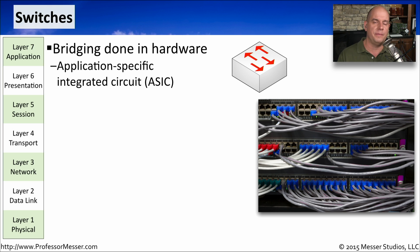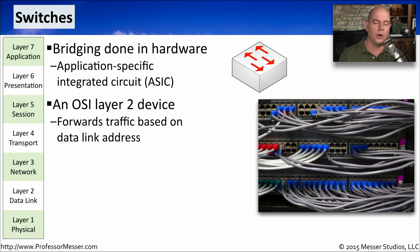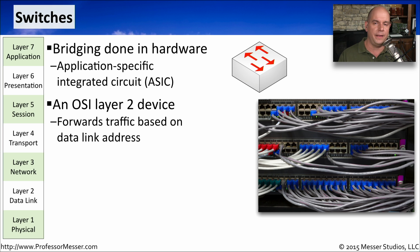Switches are able to move information very quickly because of the hardware inside of them. This hardware is called an application-specific integrated circuit, and we refer to this as an ASIC. These ASICs are designed to move information across the network based on the destination hardware address of a device. We call these OSI Layer 2 devices because they use the data link address to determine where traffic goes. This is a much more intelligent way of sending traffic than a hub, which simply sent all information to every single port on the device.